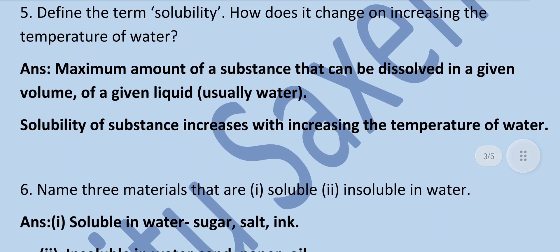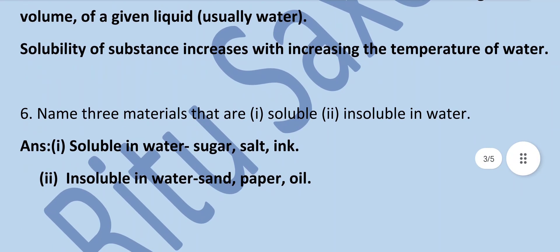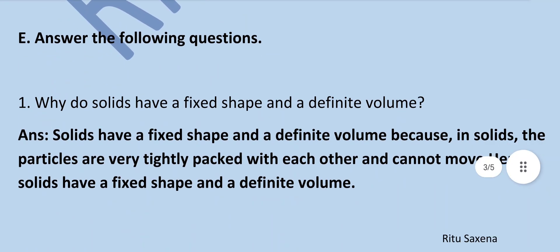The maximum amount of a substance that can be dissolved in a given volume of a liquid — usually water — is called solubility. Solubility of a substance increases with increase in the temperature of water. Name three materials soluble and insoluble in water: Soluble — sugar, salt, ink. Insoluble — sand, paper, oil.